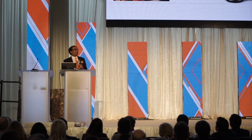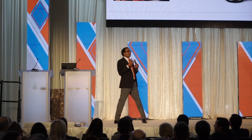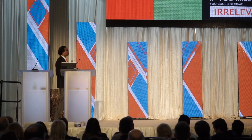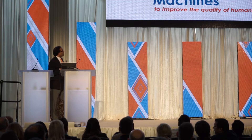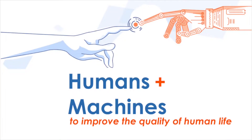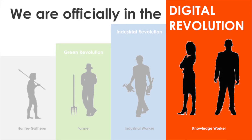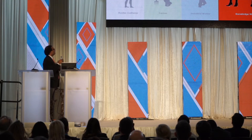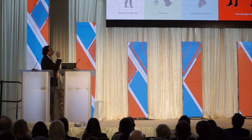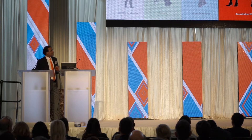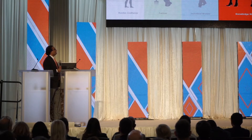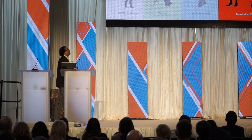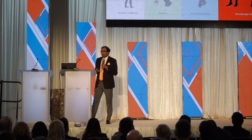The bottom line is: humans plus machines is about improving the quality of human life. We are officially in the digital revolution. If you think about the history of time — from the hunter-gatherer phase, to the farmer, to the industrial revolution and industrial workers — we are the knowledge workers of the new digital revolution, and we're in the middle of it.